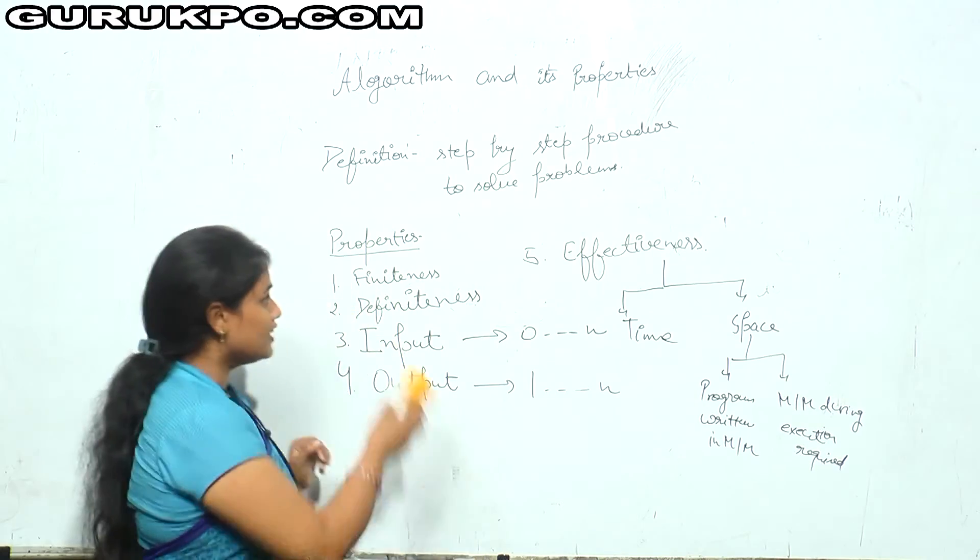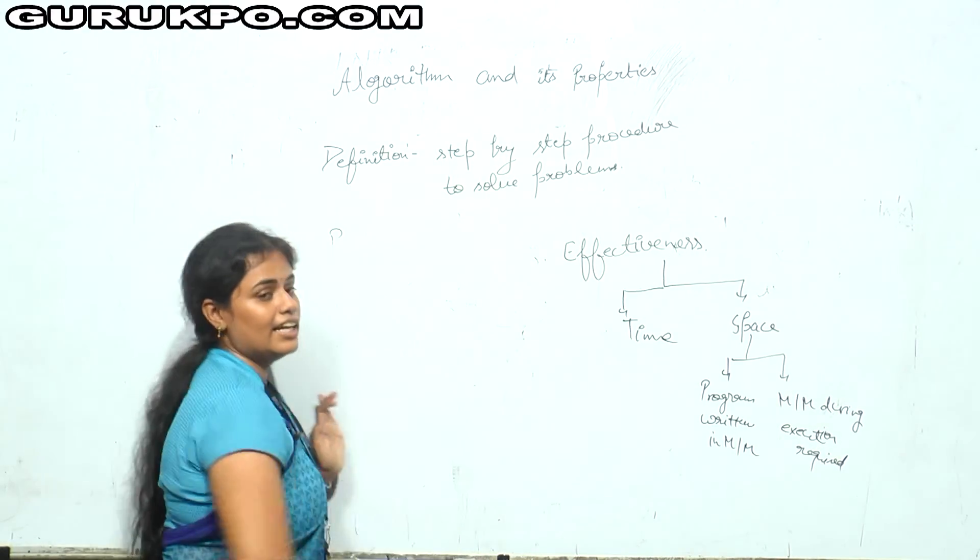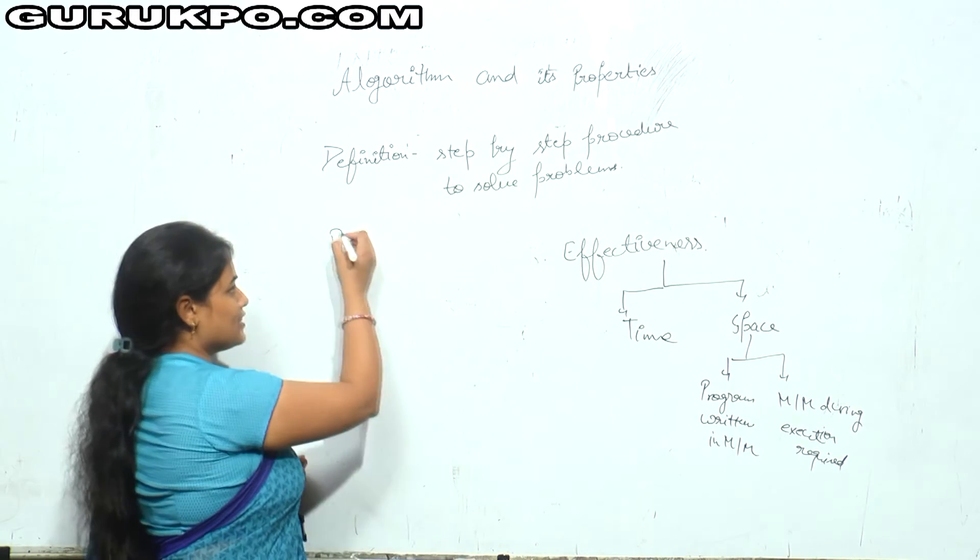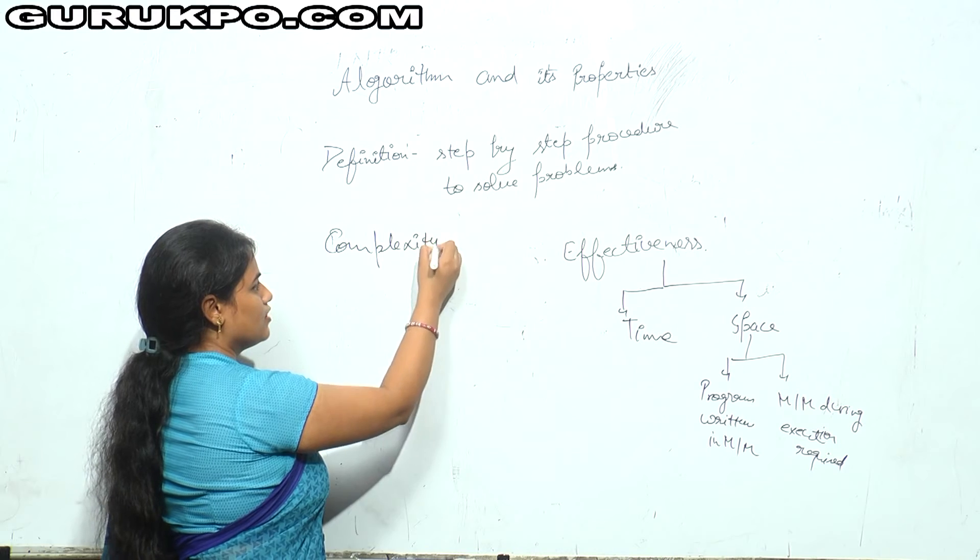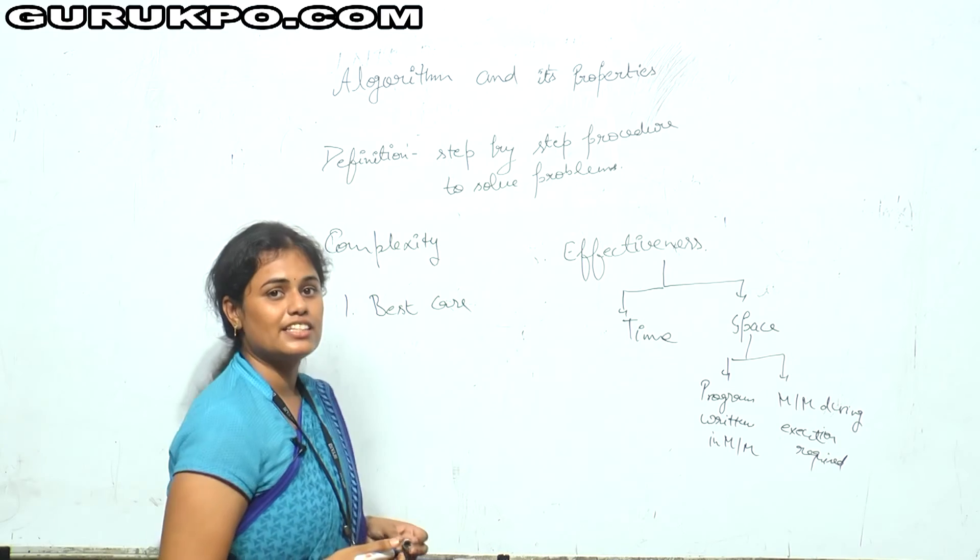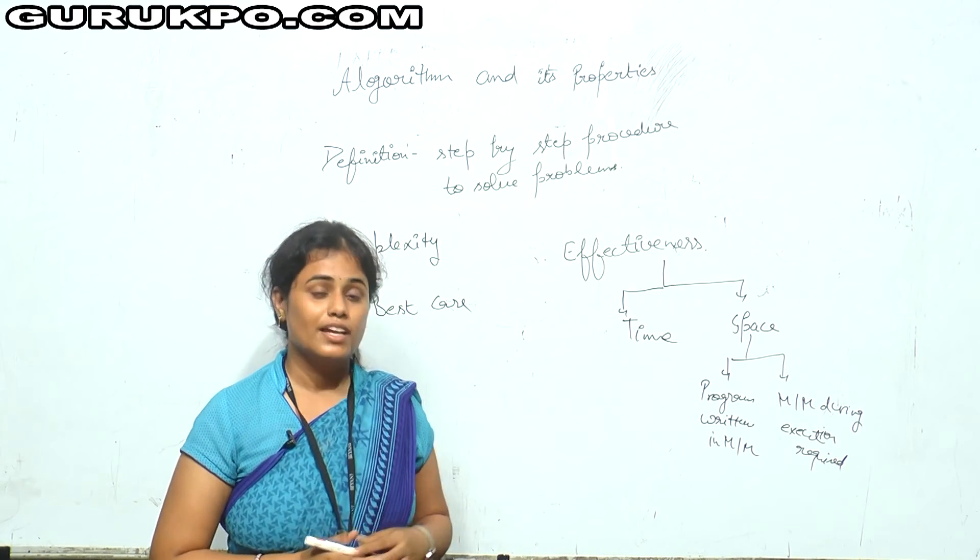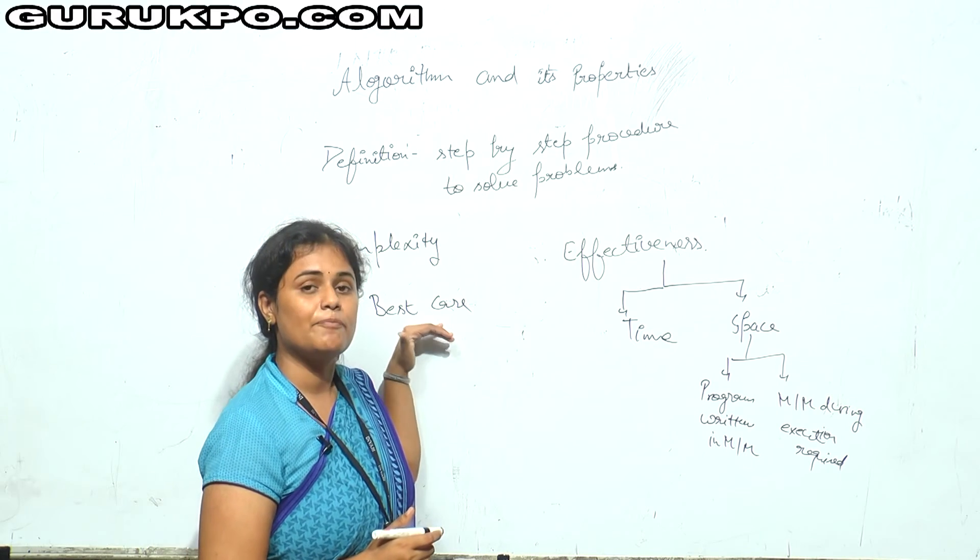Now, next is the complexity can be considered in three cases. Time complexity and the space complexity can be measured in three cases. First is best case, best case is basically the case when the complexity is minimum. For no other input there is the complexity which can be less than best case.